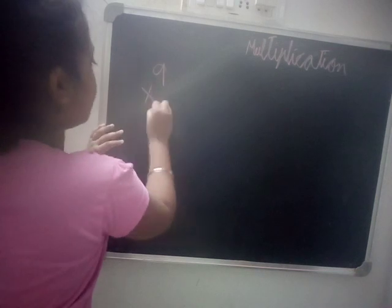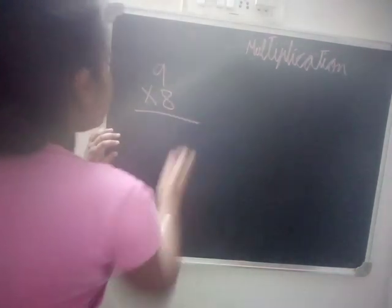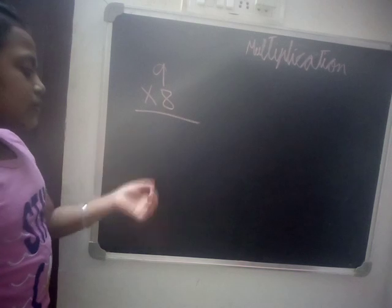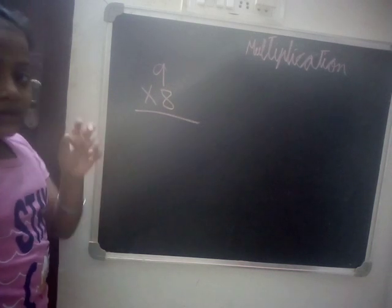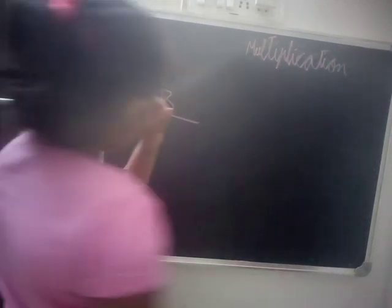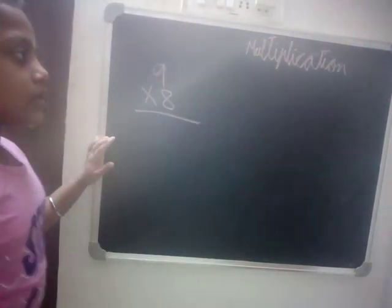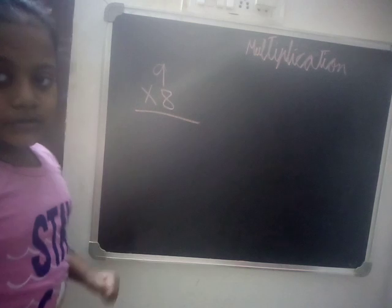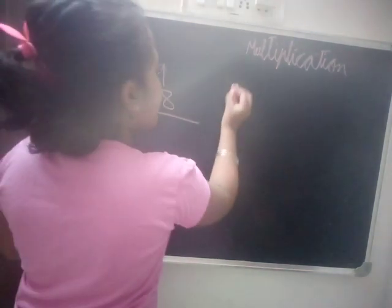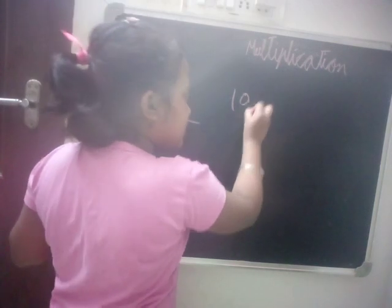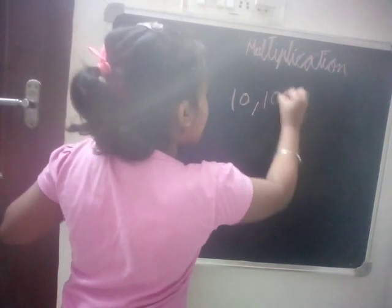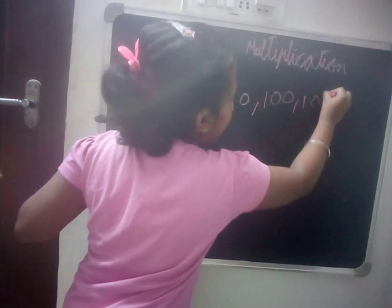First I will take a small example: 9 into 8. You might think we can do it with the help of tables only, but I will show you the base method. The base numbers are 10 and its multiples like ten, hundred, thousand, and so on.